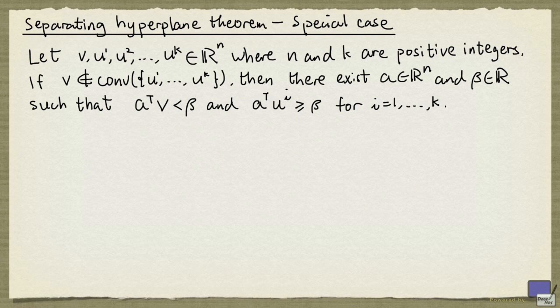Let's take a look at the picture to see what this is saying. Suppose these green dots are my ui. Now the convex hull of these points is the following set. And so we have v not in the convex set, so v is somewhere outside.